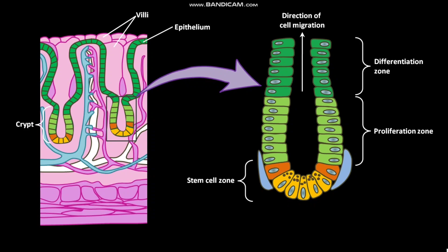This is the direction of cell migration. Mesenchymal cells create this intestinal stem cell niche. Stem cells are located precisely four or five cells above the bottom of a crypt. Paneth cells are located at the base of the crypt.